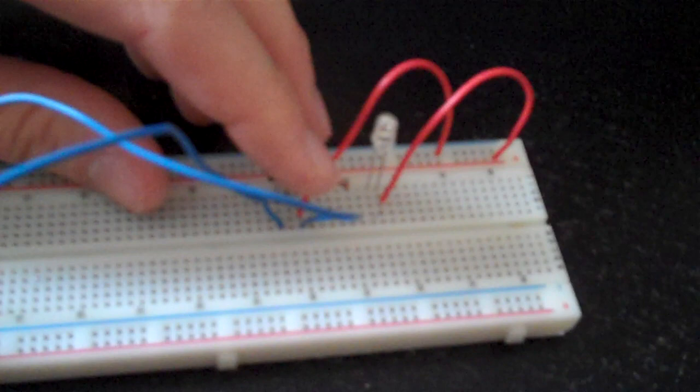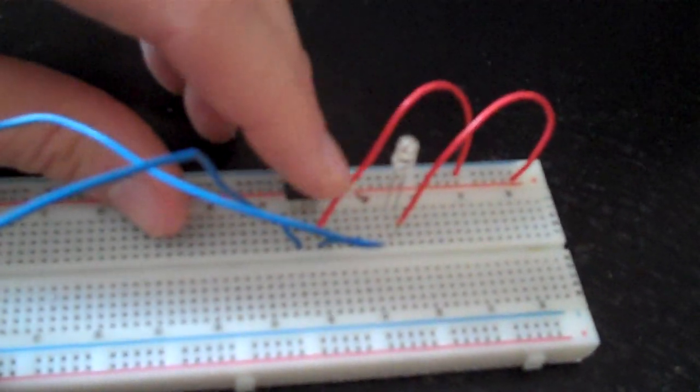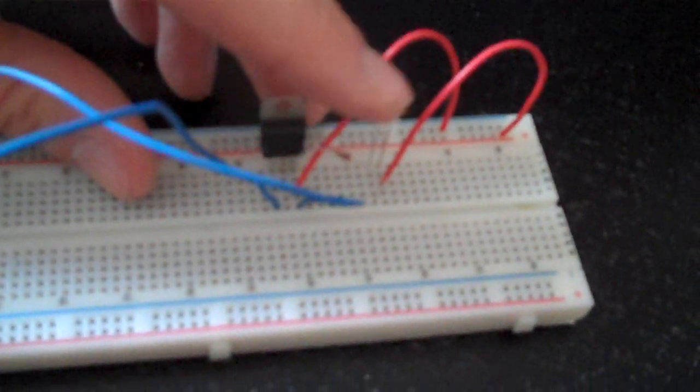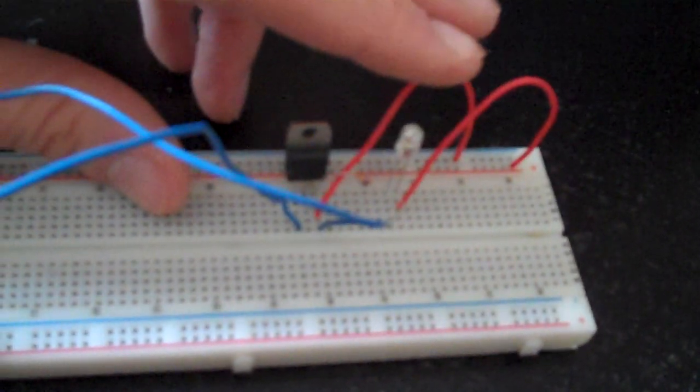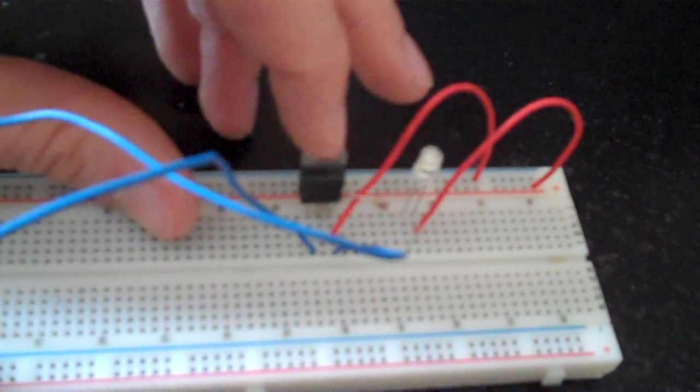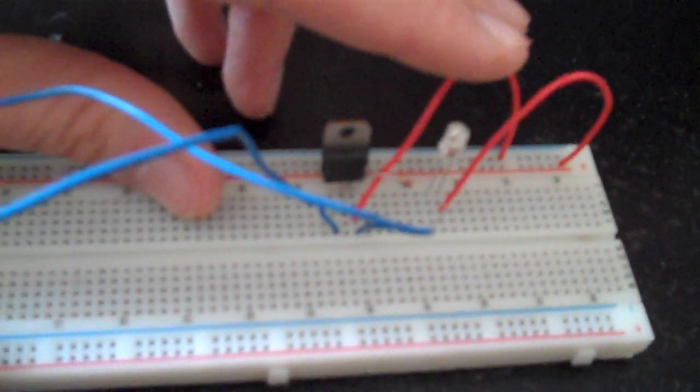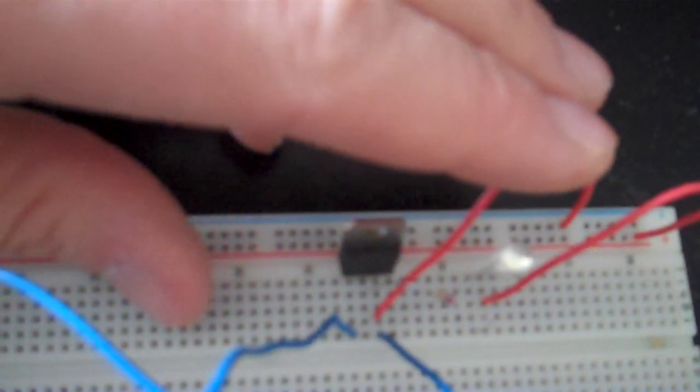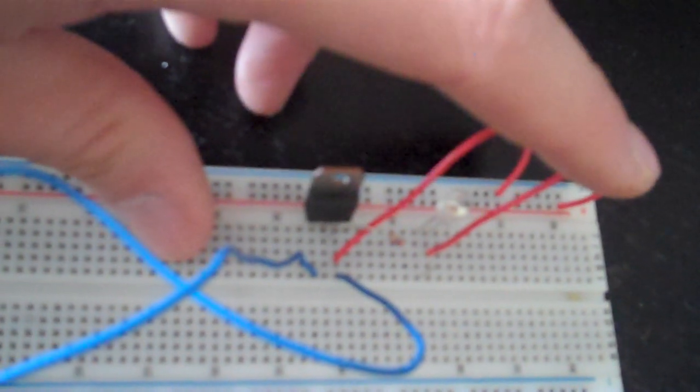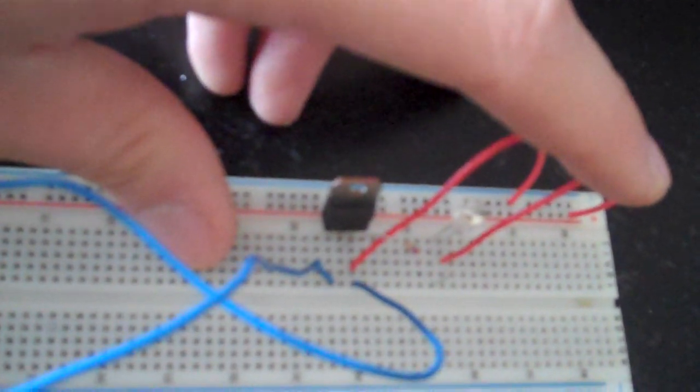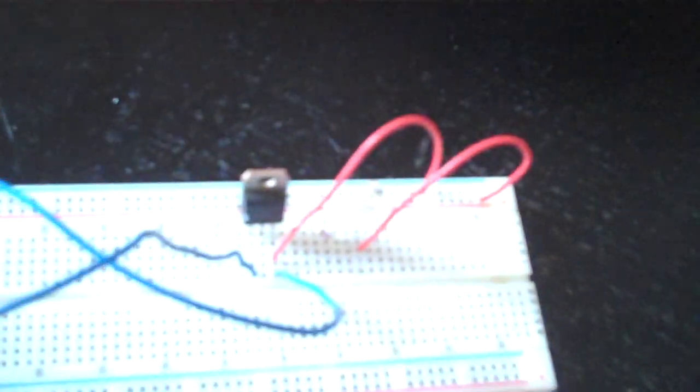The center pin of the tip is connected by a 270 ohm resistor to the negative lead of the LED. The furthermost right pin of the tip is connected to ground. And then the positive lead of the LED is connected to the power supply.